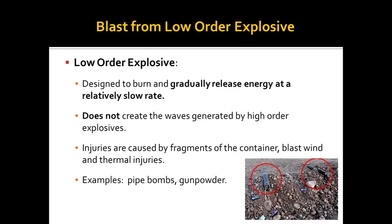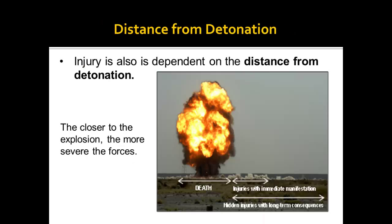Examples of low order explosives are pipe bombs and gunpowder. The injury can also be dependent on the distance from detonation. As this picture depicts, the closer to the explosion, the more severe the force is. Extremely close to the explosion can result in death, whereas the further you get away, the less injuries that are sustained. However, there could be hidden injuries with long-term consequences even though you are far away from the explosion site.